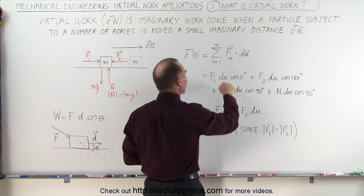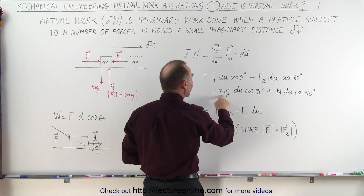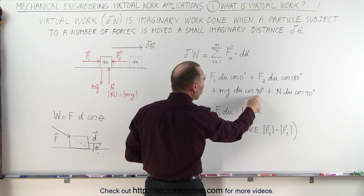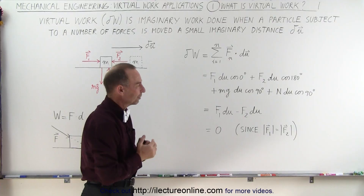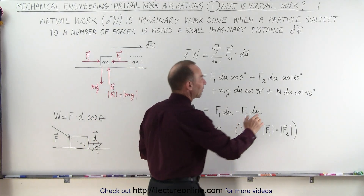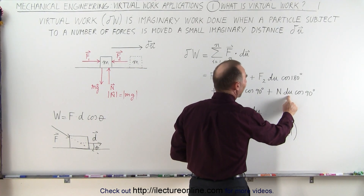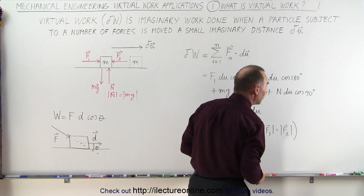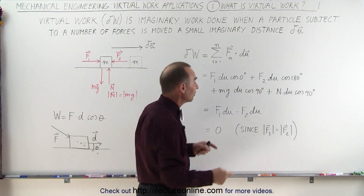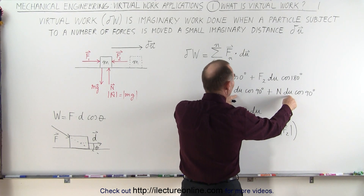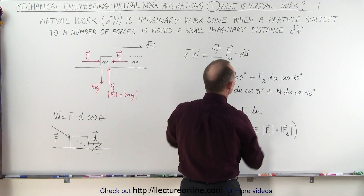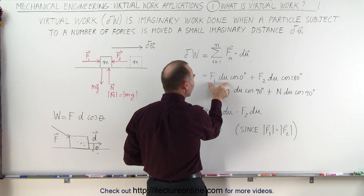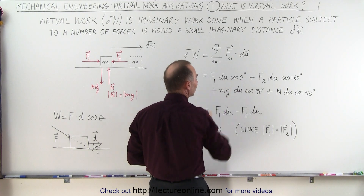Here we have the force of gravity pulling down, times the imaginary displacement du, times the cosine of the angle between them — in this case 90 degrees. The cosine of 90 is zero. And then we have the normal force pushing back, times the imaginary displacement du, times the cosine of the angle between them — again 90 degrees. So these two components drop out because the cosine of 90 is zero.